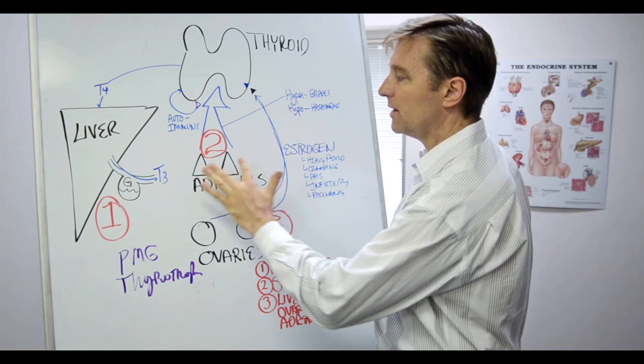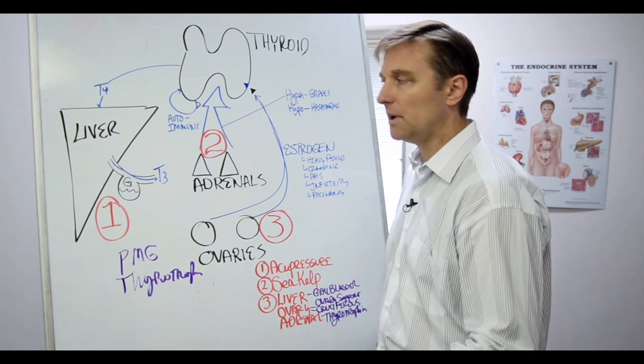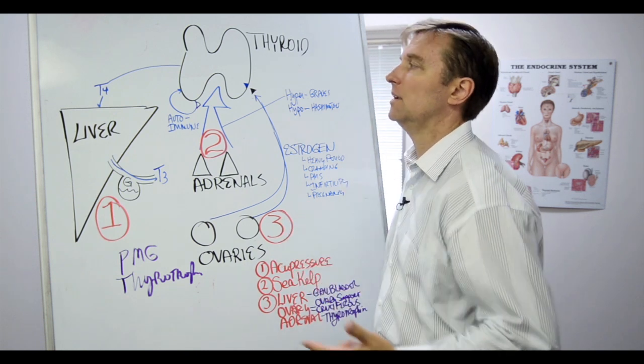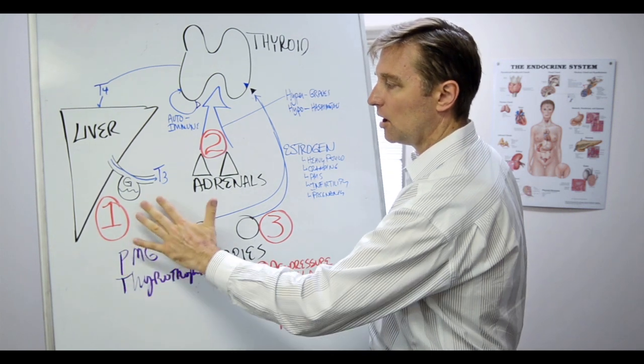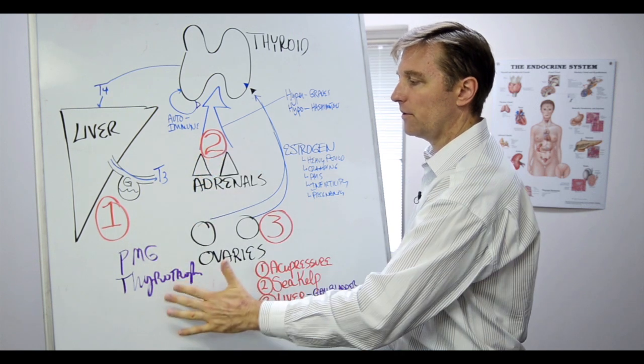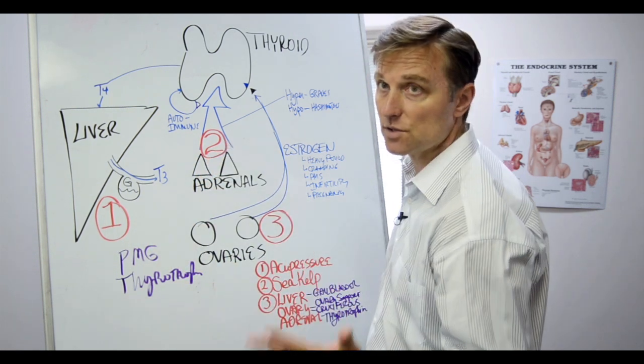And then support the adrenals. Do things for the adrenal support. That's in a different video, but I just want you to think with the information and not be robotic about it. So number one, you do the gallbladder formula. Number two, you do Thyrotrophin PMG and adrenal support and eliminate the trigger and stress.